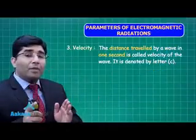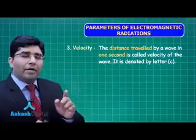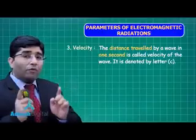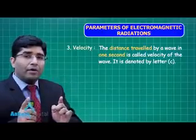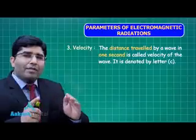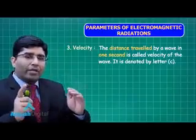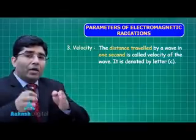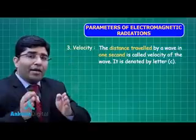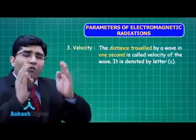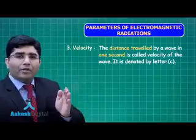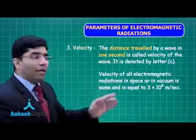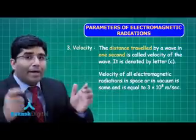The next parameter is velocity, which is displacement per second. One very important thing to note: whichever electromagnetic radiation it is — whether x-ray, gamma ray, visible, infrared, ultraviolet, radio waves, or any other — the velocity of the wave will always be equal to 3 times 10 to the power 8 meters per second.